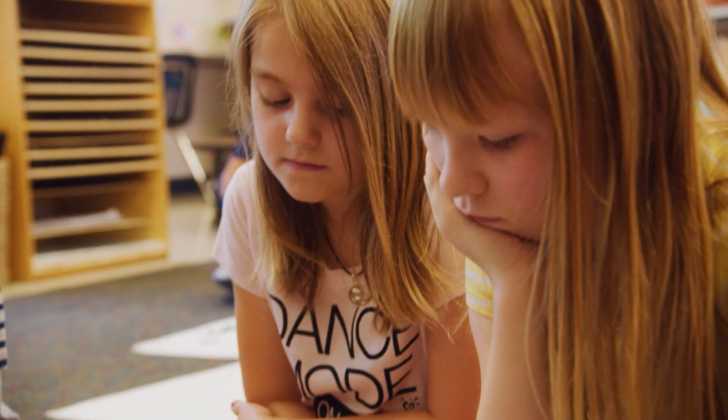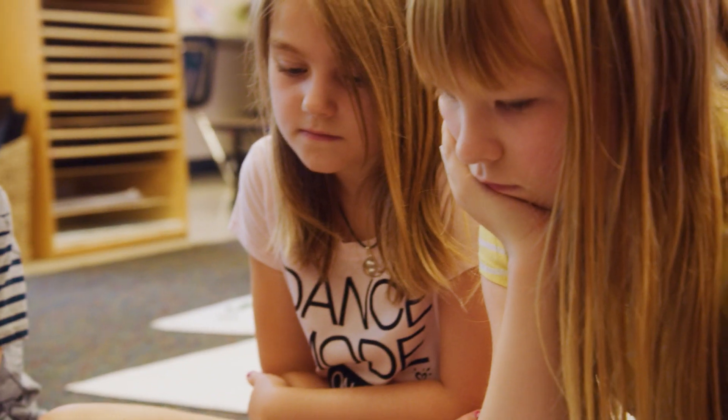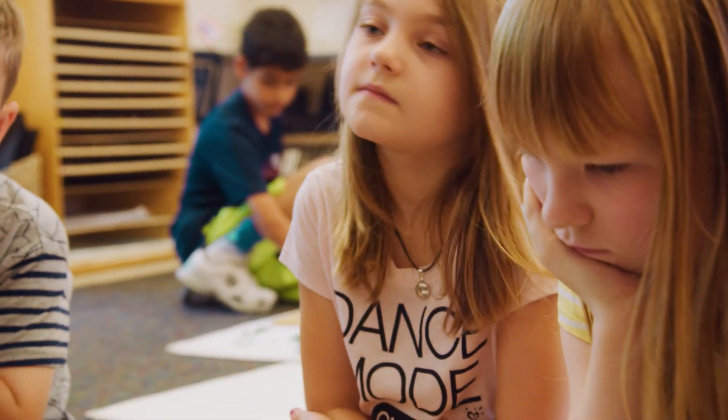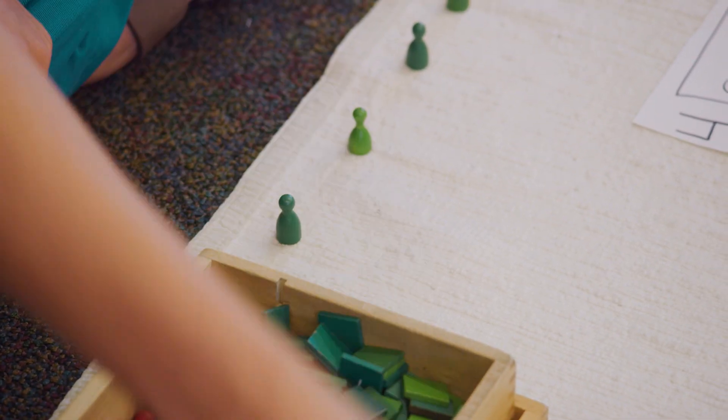In division, we're going to start with our largest place value to divide. Division is all about being fair, so each skittle needs the exact same amount. I'm going to distribute evenly my hundreds.